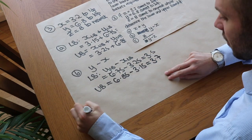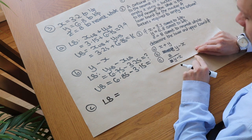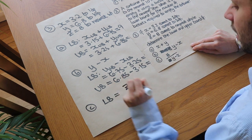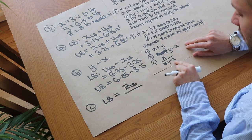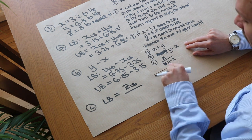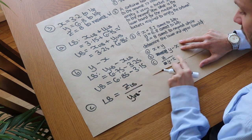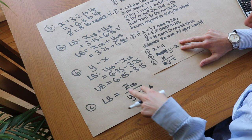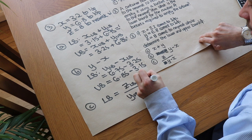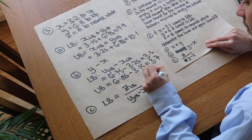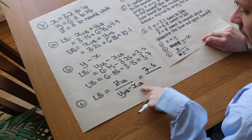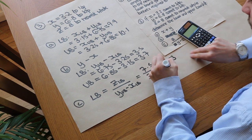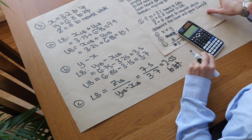For the lower bound of z divided by (y minus x), we want a small number divided by a big number. So use the lower bound of z and divide by the biggest possible value of y minus x — which we found earlier is 3.7. That's 7.5 divided by 3.7, giving 2.03 to three significant figures. The upper bound can be found in a very similar way.